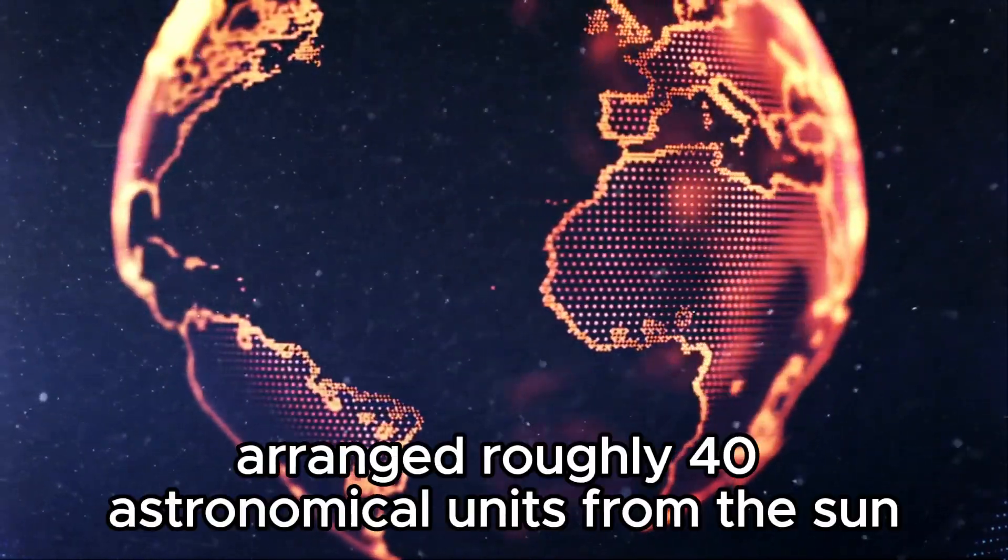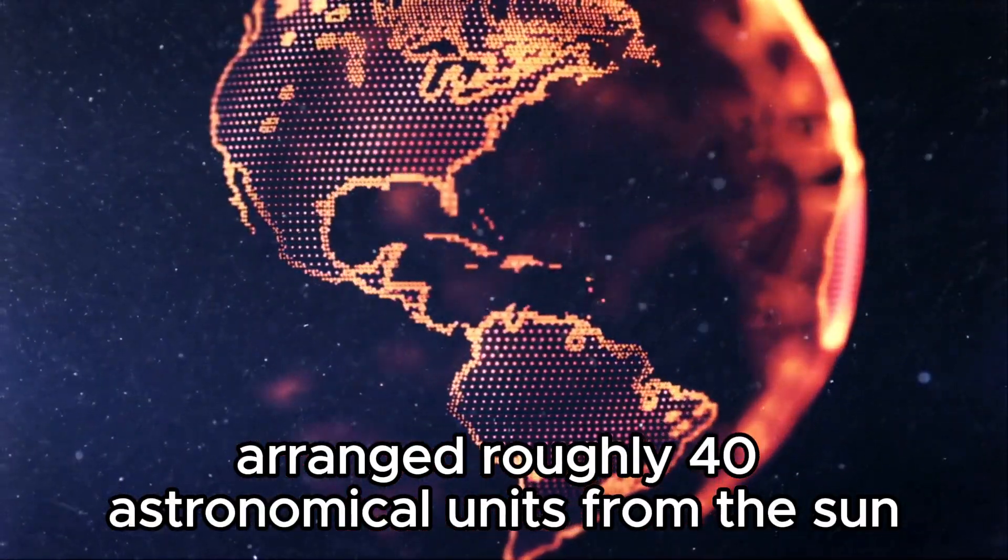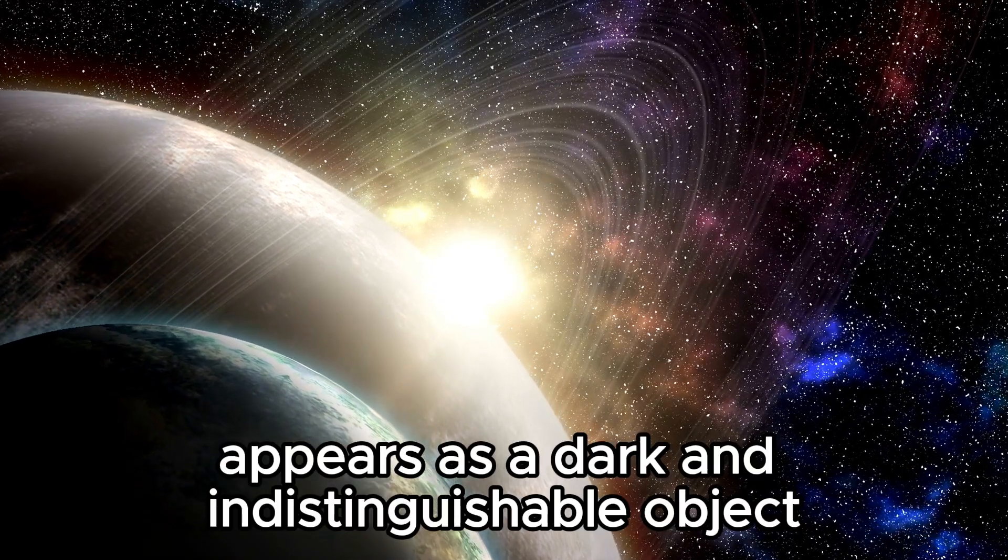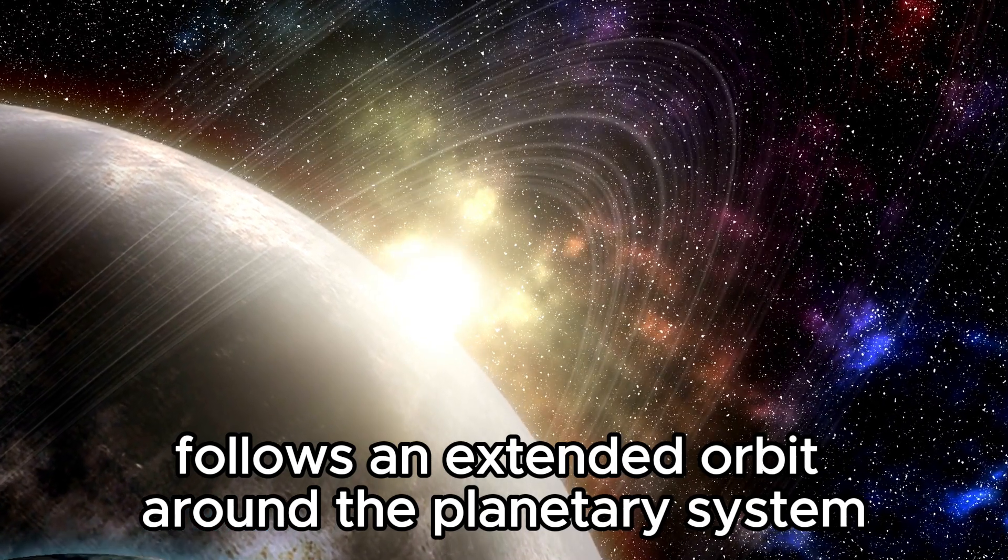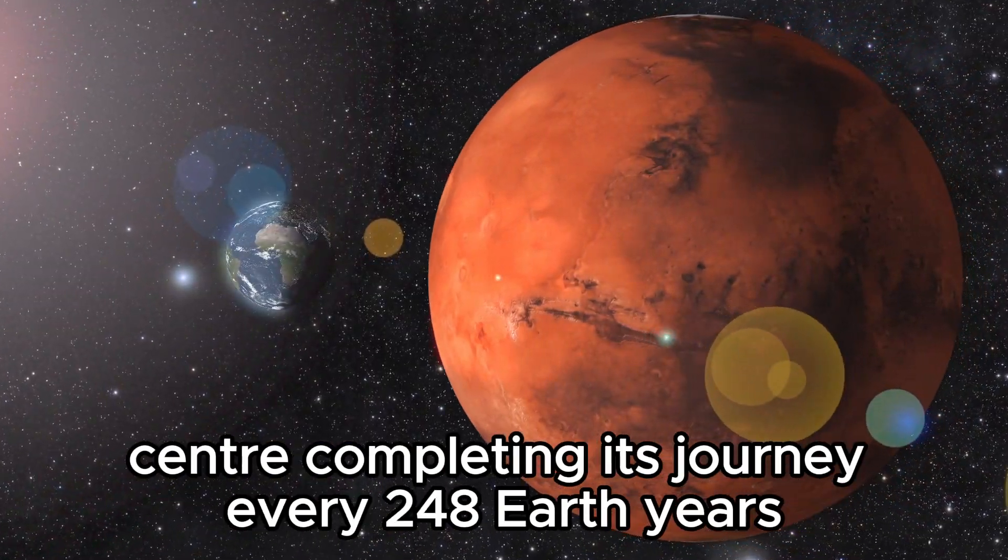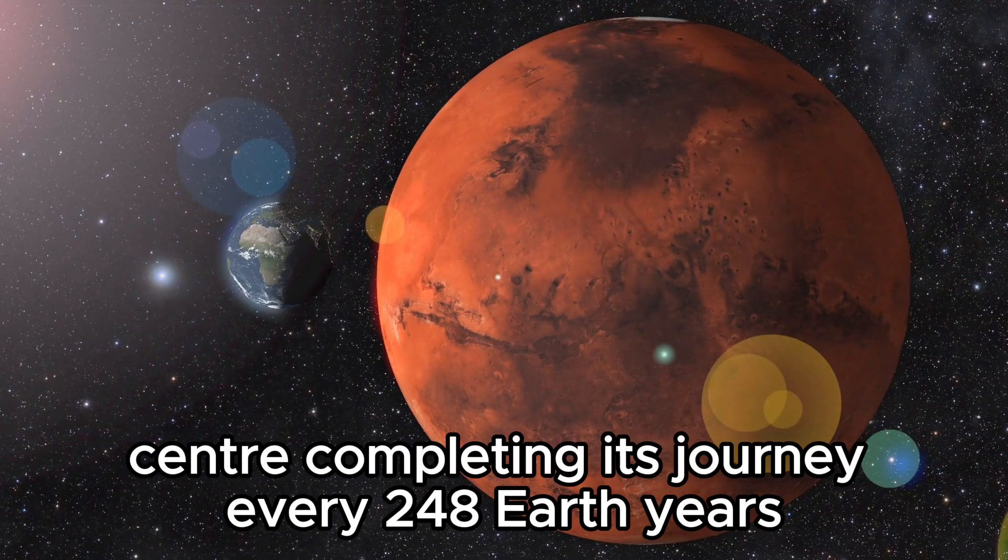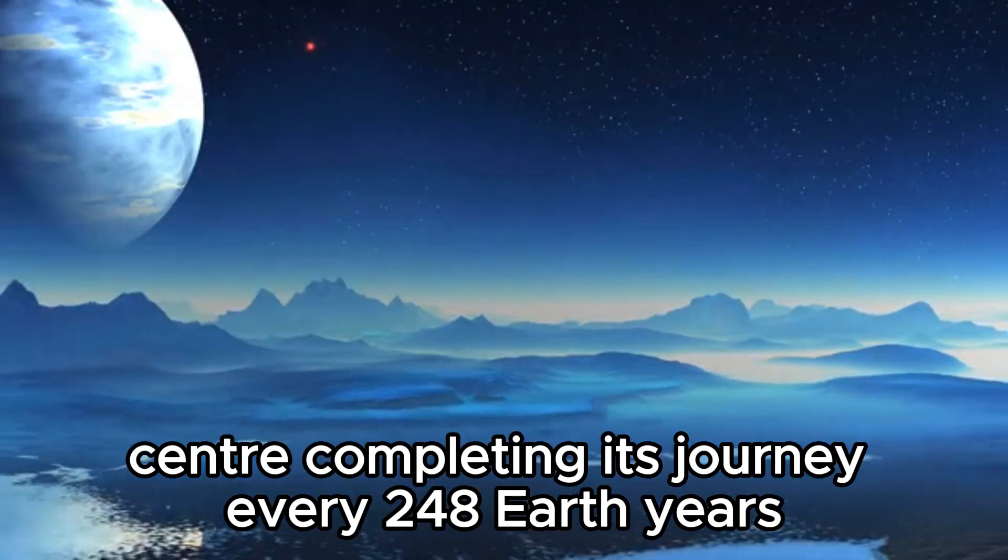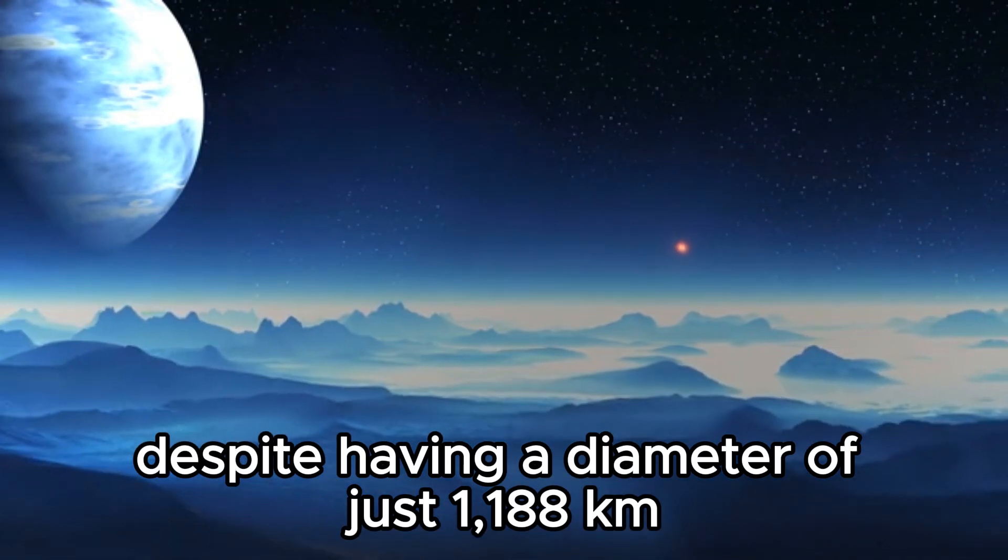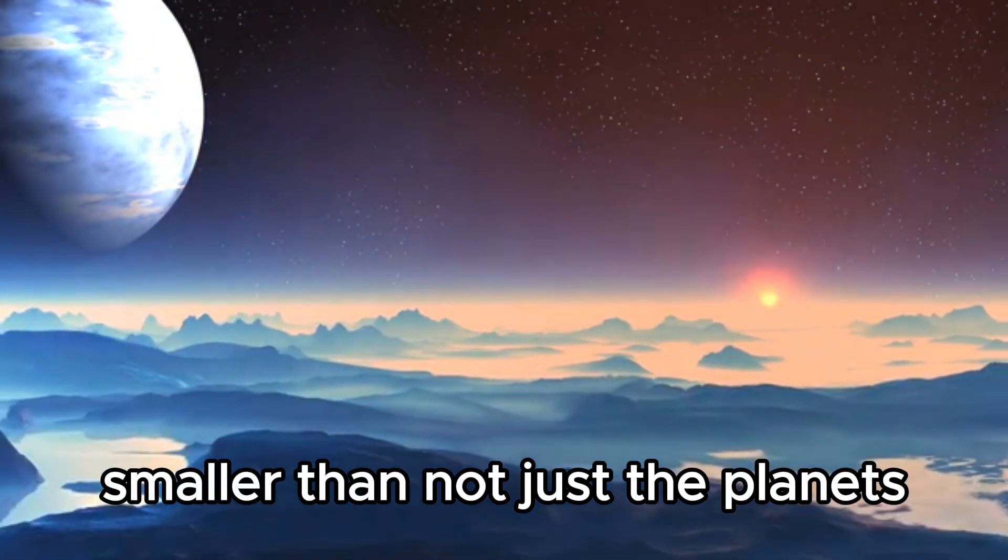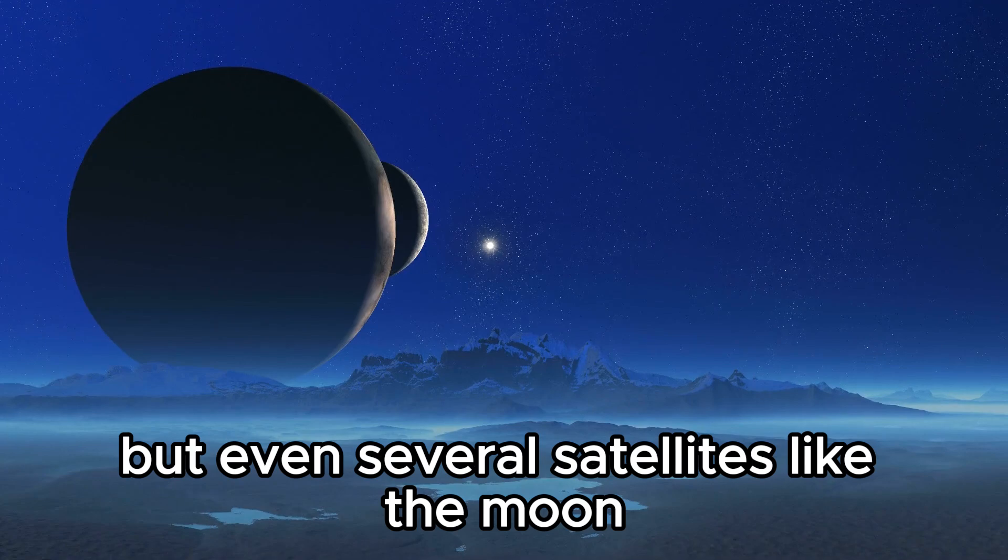Pluto, arranged roughly 40 astronomical units from the sun, appears as a dark and indistinguishable object. This distant body follows an extended orbit around the planetary system's center, completing its journey every 248 Earth years. Despite having a diameter of just 1,188 kilometers, smaller than not just the planets but even several satellites like the Moon.